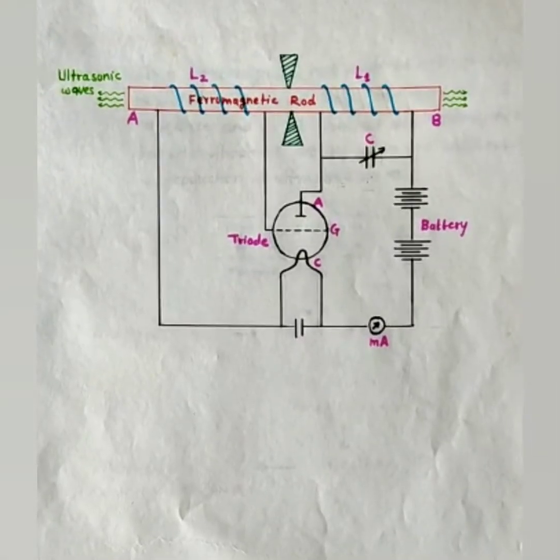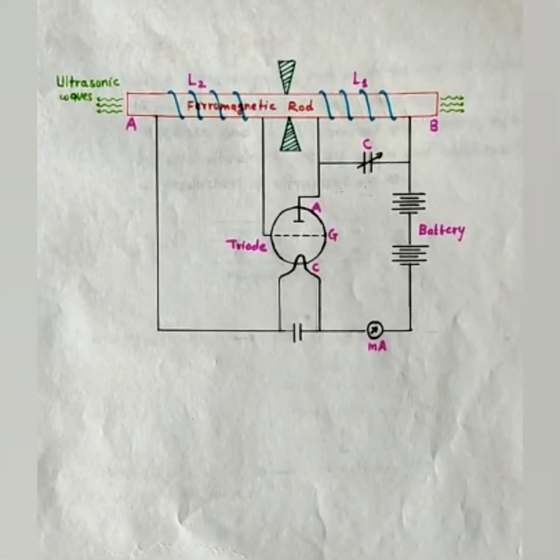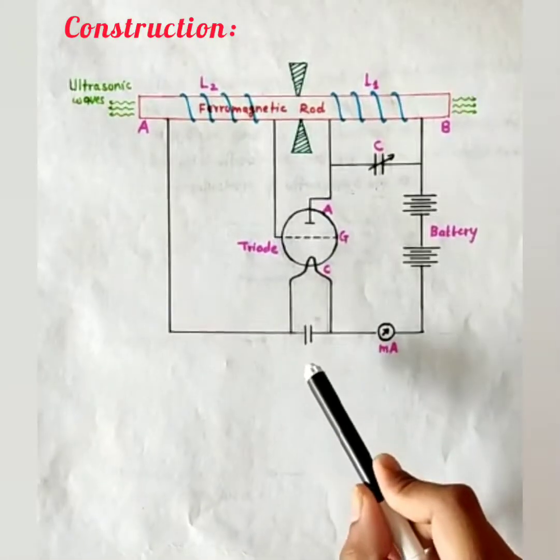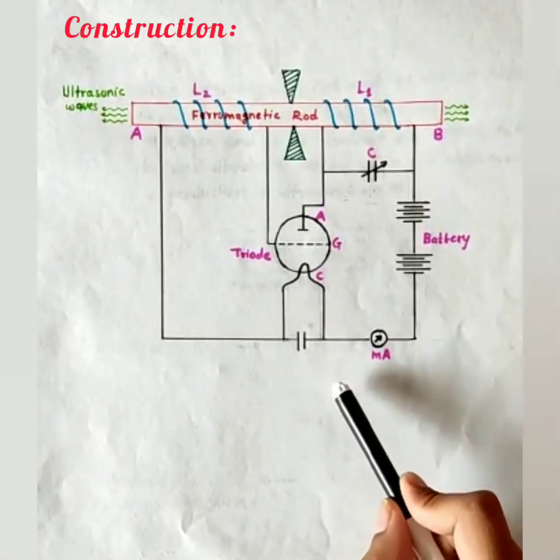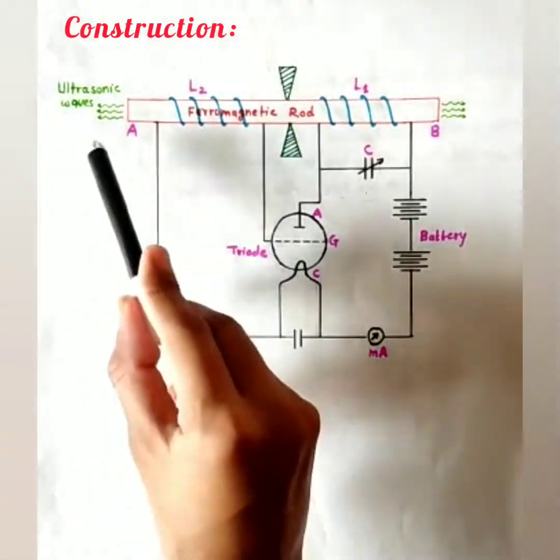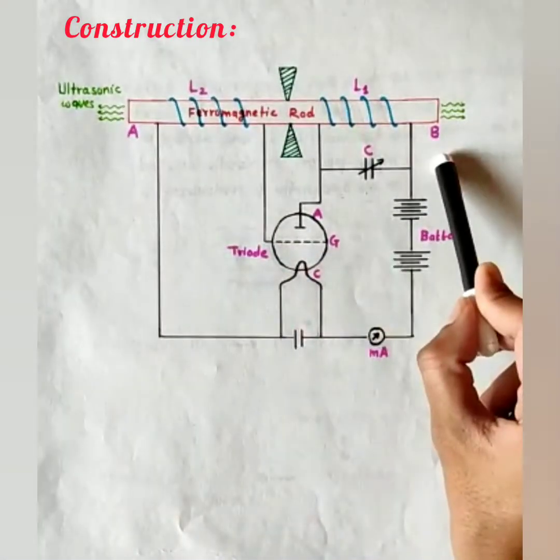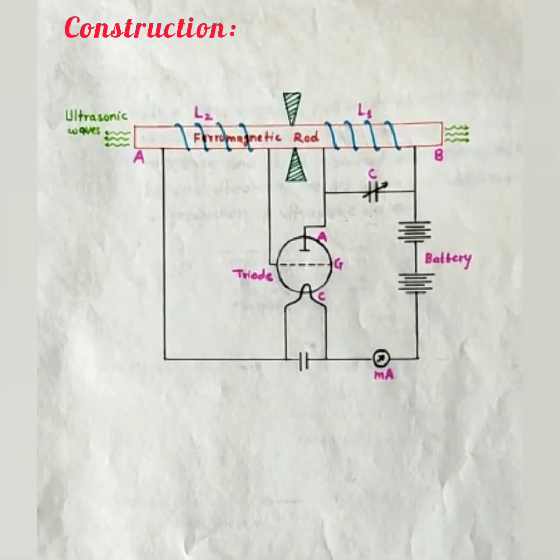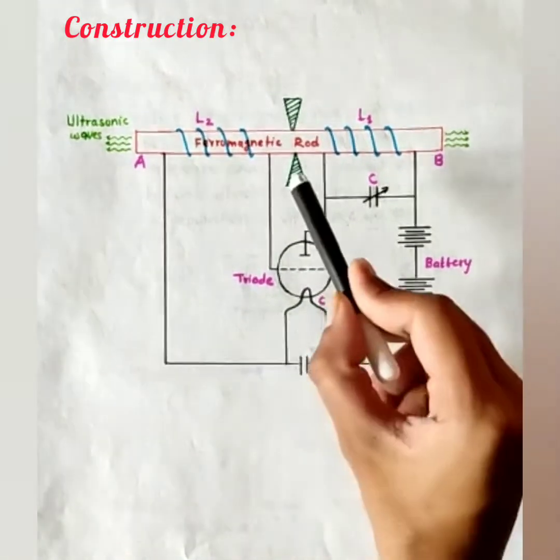Now let's understand the construction and working of magnetostriction oscillator. This is the circuit diagram of magnetostriction oscillator. Let's see its construction. Here, AB is the rod made up of ferromagnetic material, iron and nickel. This rod is clamped at the middle.